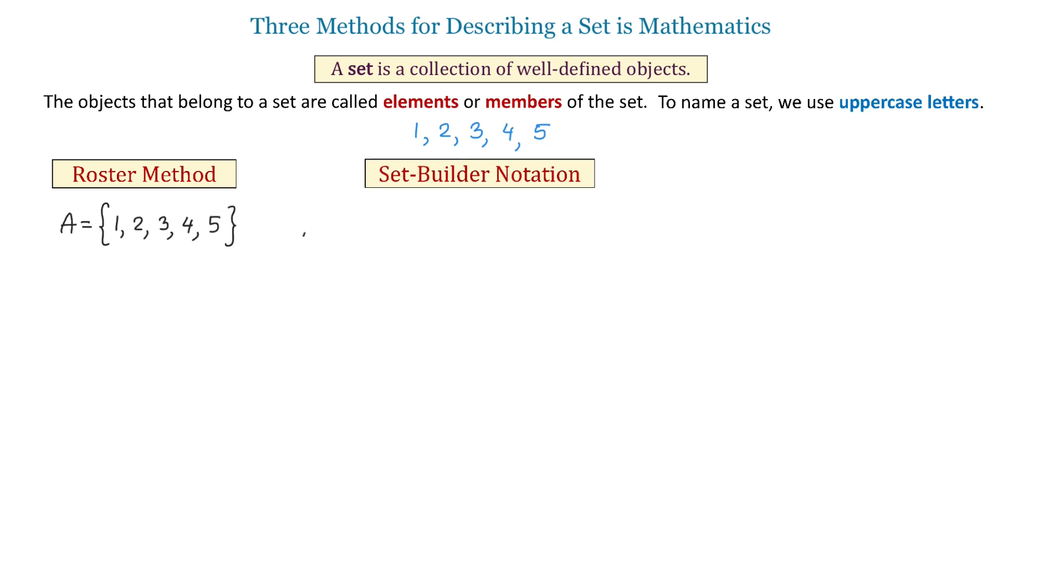then we will write A equals. Then, we will open the braces. And inside, we will write X, followed by a vertical line. Then, to the right of the vertical line, we will write the condition that the variable must meet to belong to this set. In this case, we will write that X is a natural number less than 6.